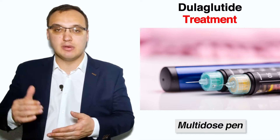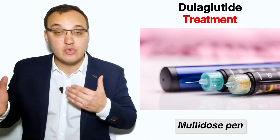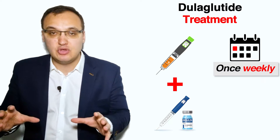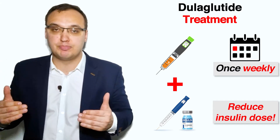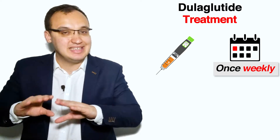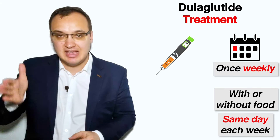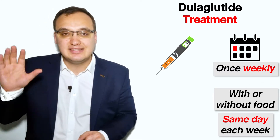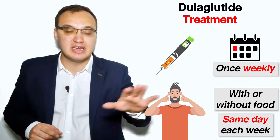Dulaglutide is administered with a multi-dose pen similar to that of insulin, but note that dulaglutide and insulin are very different. Dulaglutide is given once weekly. It can be used with insulin as an add-on therapy, but it is essential to reduce the insulin dose to prevent hypoglycemia. It is administered once weekly, any time of the day, with or without food, and must be given on the same day each week. To do it effectively, pick a day like Saturday that you can easily remember, and set a reminder on your phone or have somebody notify you on those days.